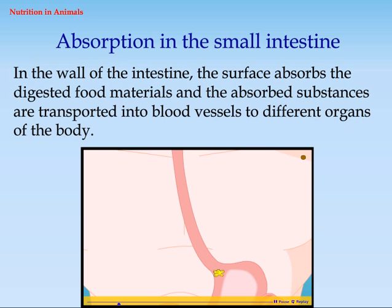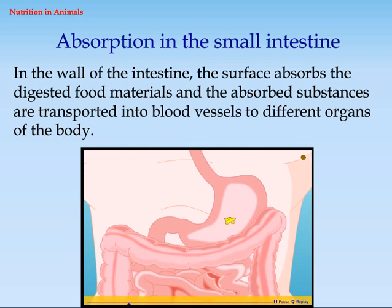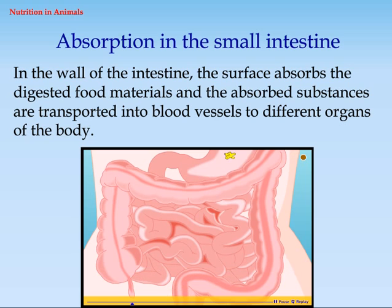The surface absorbs the digested food materials, and the absorbed substances are transported into blood vessels to different organs of the body.